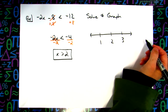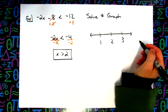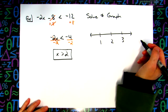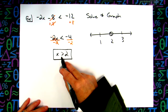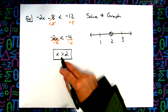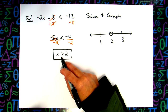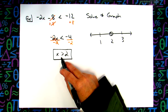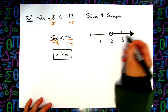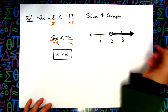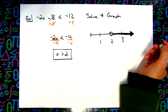Open or closed dot? Open dot — we put an open dot on 2 because of the greater than sign. Which way do we shade? To the right. So we shade to the right, and that's what it looked like on the 12 questions we did at the beginning of class.